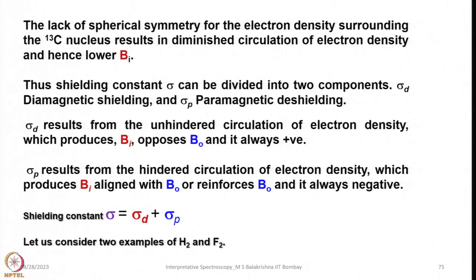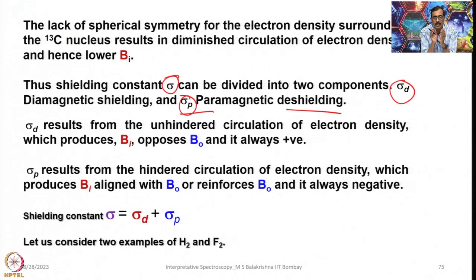After considering the nature of the electron density — whether spherically symmetric or unsymmetric — the shielding constant σ can be divided into two components: σ_d (diamagnetic shielding) and σ_p (paramagnetic deshielding). σ_d results from the unhindered circulation of electron density, which produces B_i that opposes B_naught and is always positive, resulting in shielding.